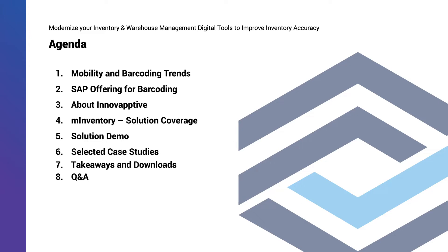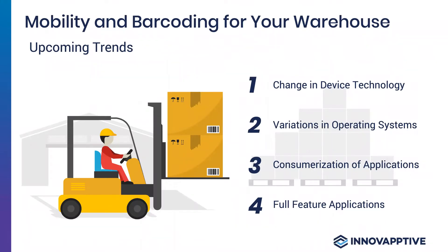What is changing in the warehouse space when it comes to technology? The number one change the industry is experiencing is the changes to the device landscape. The current barcoding technology is primarily centered around Windows, and that is changing. We're seeing a big variation in operating systems for barcoding technology, and there's a consumerization of applications angle happening with the prominence of Android and iOS in the consumer application space.